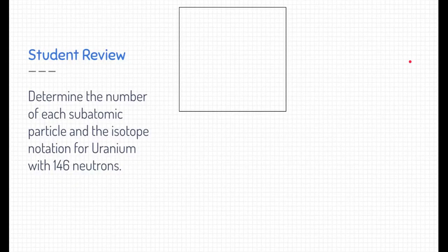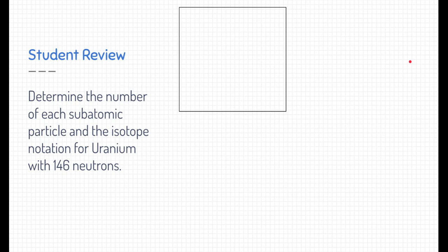All right, let's try this again. See if you can determine each subatomic particle and the isotope notation for uranium with 146 neutrons. Pause the video now and see if you can figure this one out yourself.